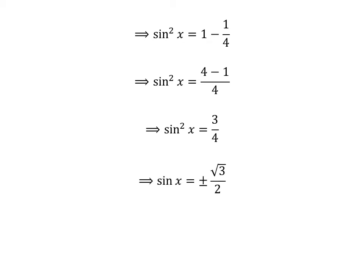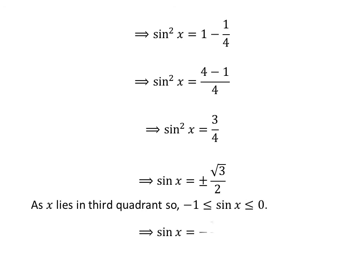Taking the square root of both sides gives us sine of x is equal to plus or minus square root of 3 upon 2. Since x lies in the third quadrant and the sine function lies between minus 1 and 0 in the third quadrant, sine of x is equal to minus square root of 3 upon 2.